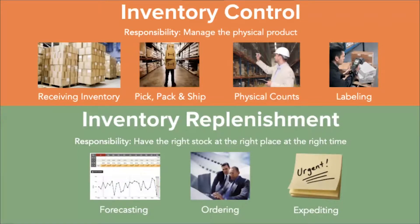When we think about inventory management, what comes to mind first is what I would call the inventory control aspect — the physical product and the transactions around the movement of that physical product. We're talking about pick, pack, and ship processes out in the warehouse when selling a product. Maybe we're in a manufacturing environment assembling and building, with bills of materials, routes, work orders, and receiving product in against purchase orders. A lot of times we manage those transactions using automated tools — barcode, labeling — to improve accuracy and speed.